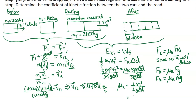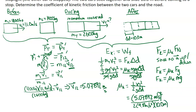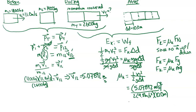We get a coefficient of kinetic friction of 0.13, which needs to be between 0 and 1 — and it is. That's quite low for rubber on pavement, so perhaps it was a wet day or there was ice or snow on the road. Therefore, the coefficient of kinetic friction is 0.13.